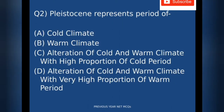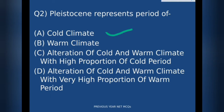Moving on to the second question: Pleistocene represents the period of — A) cold climate, B) warm climate, C) alteration of cold and warm climate with high proportion of cold period, or D) alteration of cold and warm climate with high proportion of warm period.